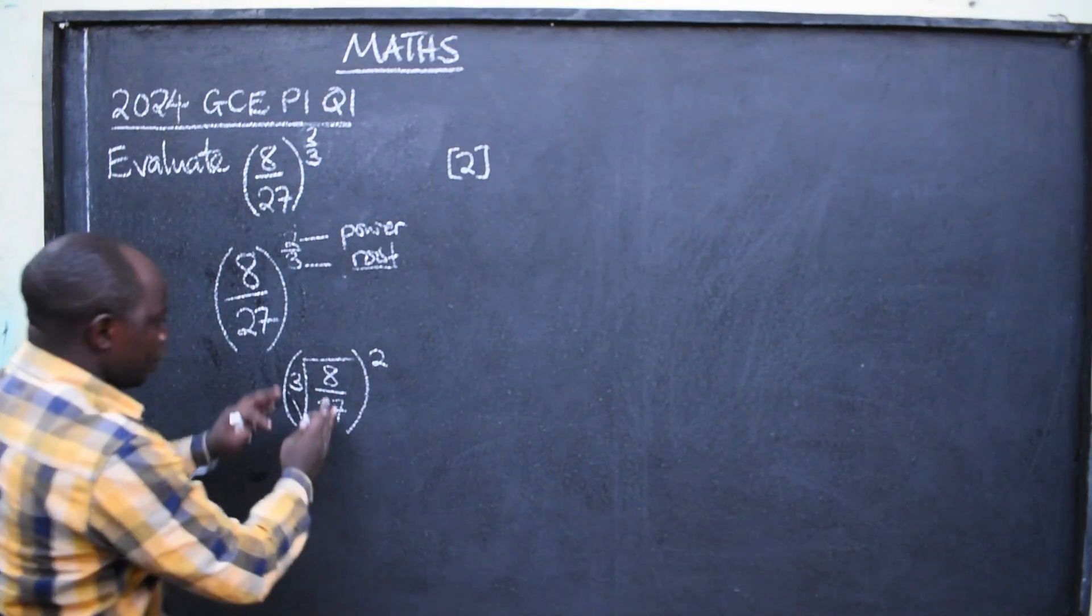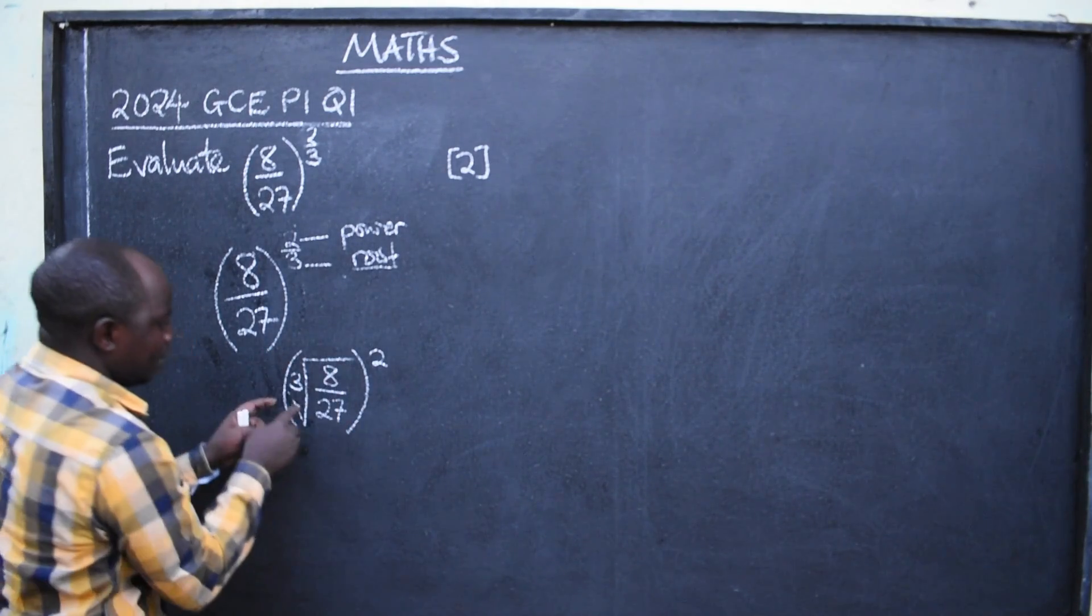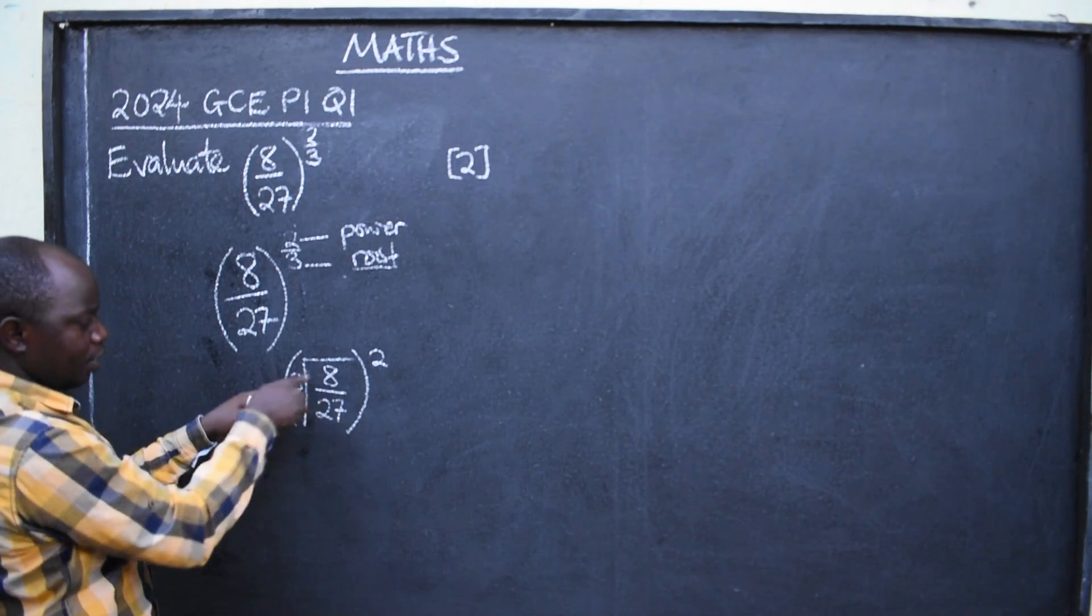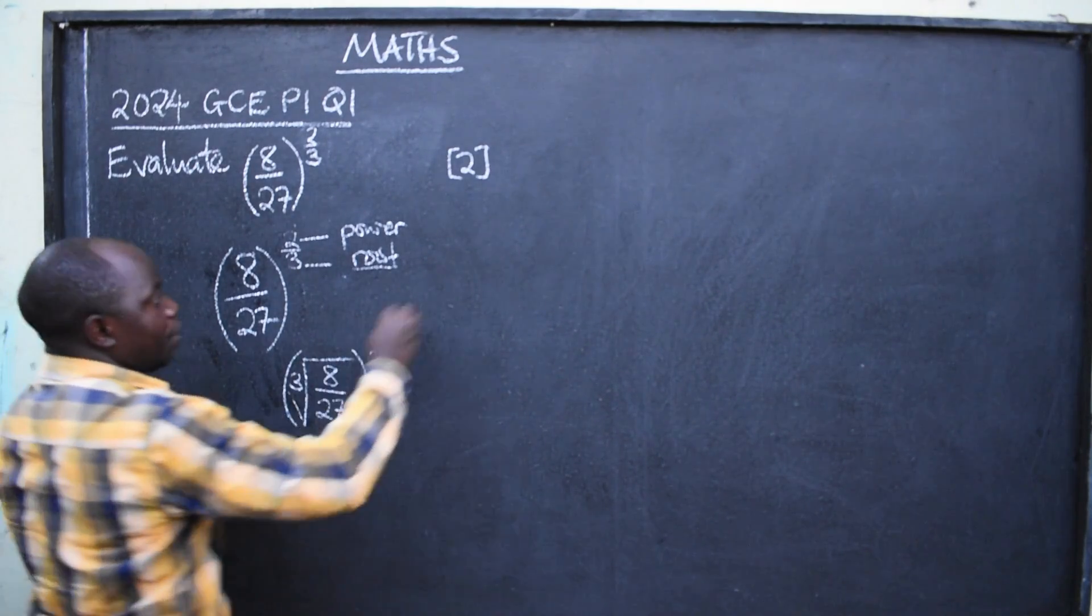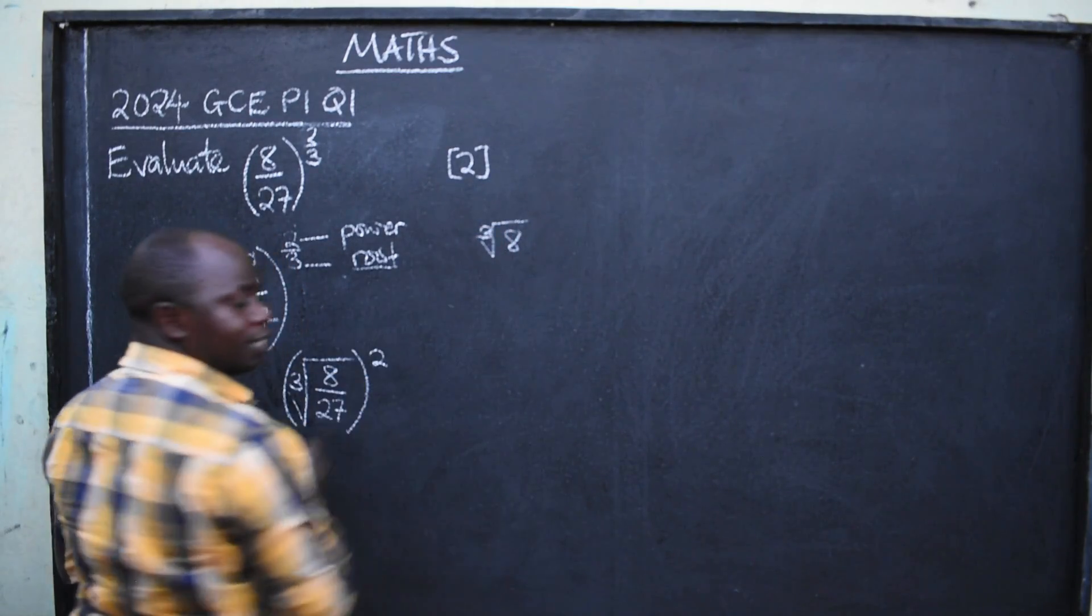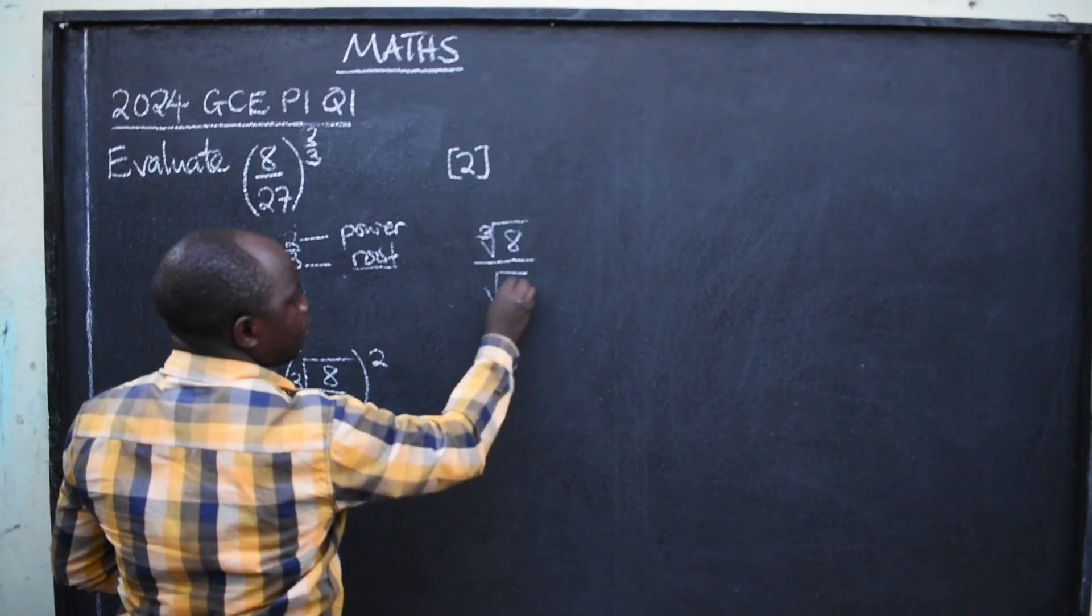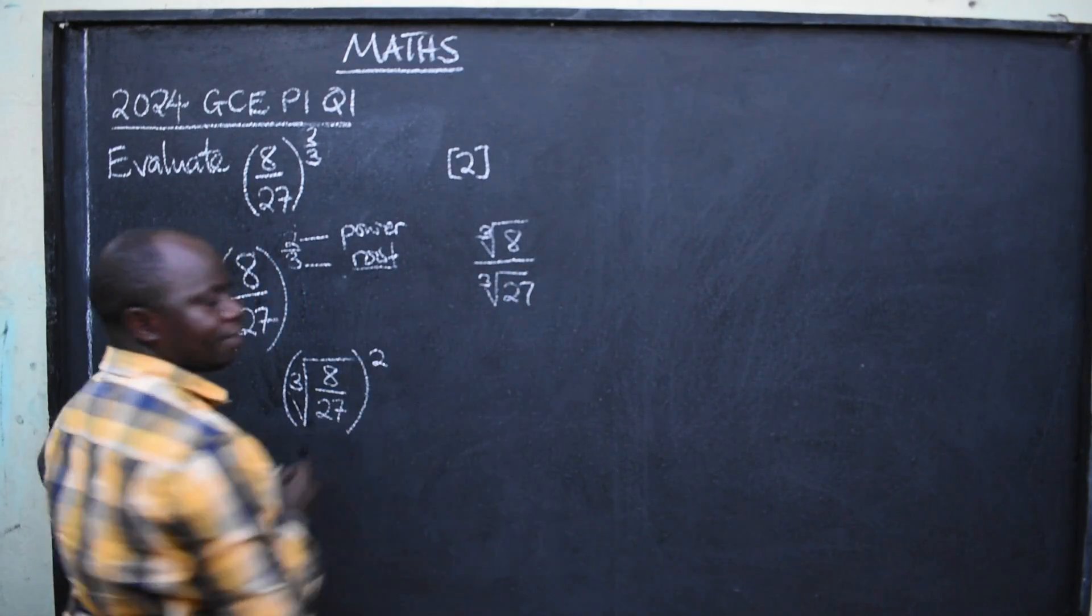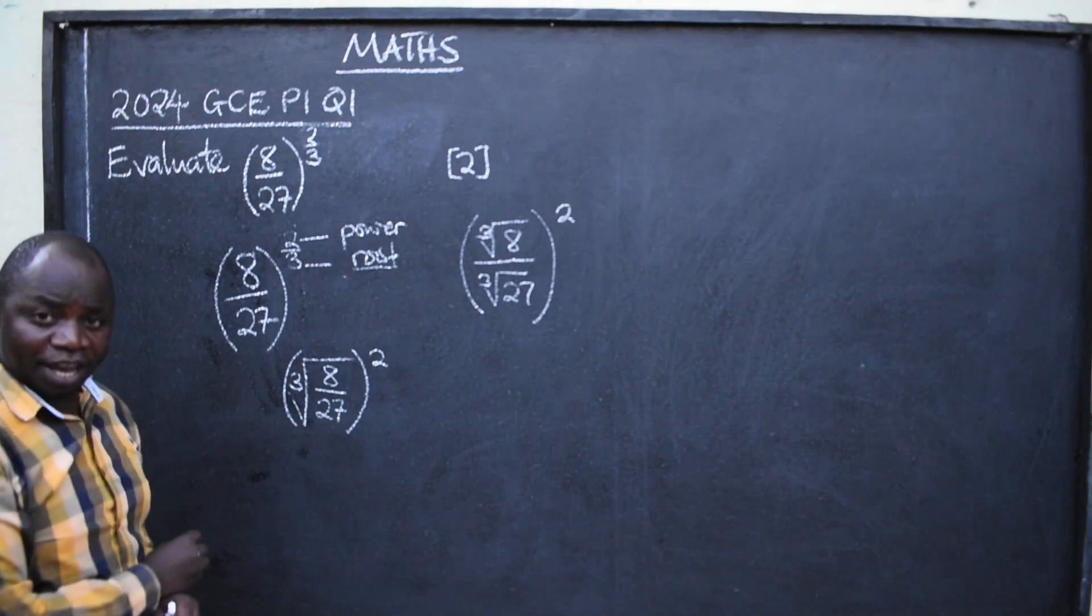What next? You are now going to understand the meaning of this. What is inside? Cube root of 8, cube root of 27. So, you are going to separate. Remember, there is a power here. So, we are going to separate. Cube root of 8, like this, over cube root of 27, like this. Everything here raised to the power 2. Don't forget.